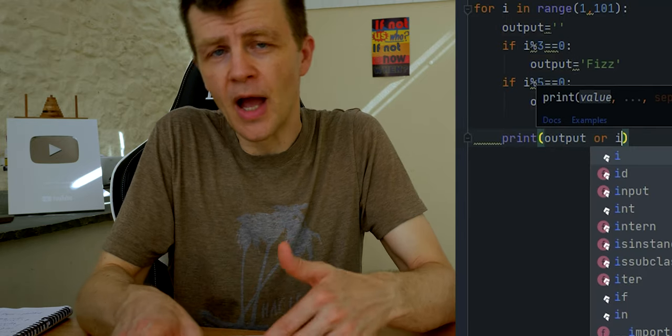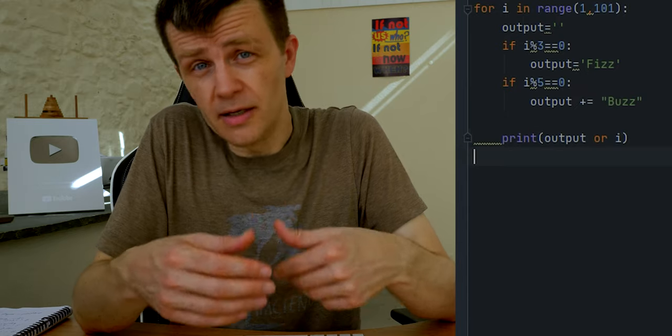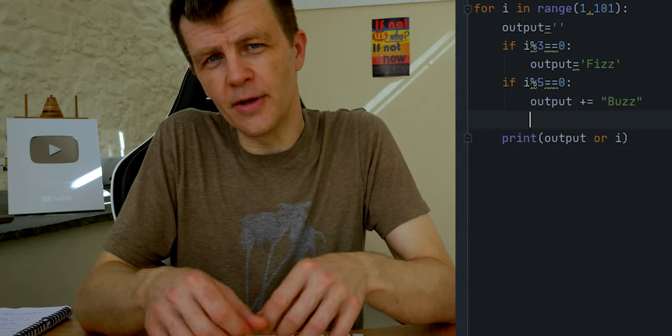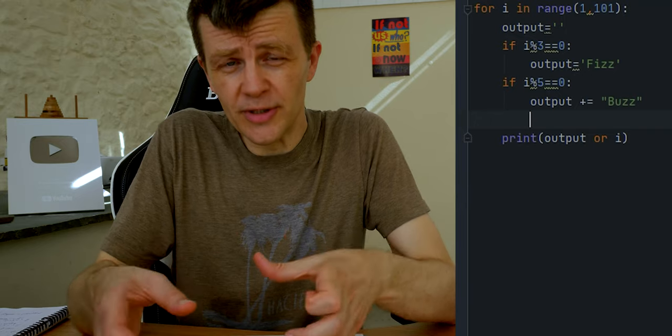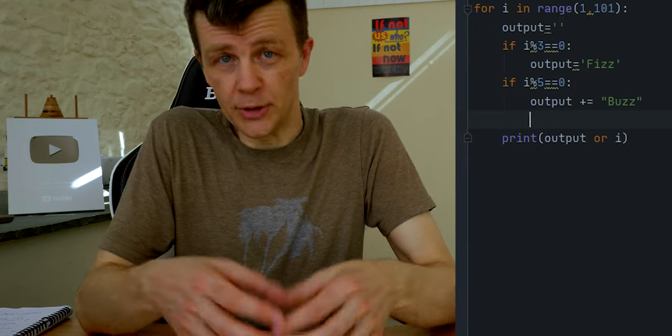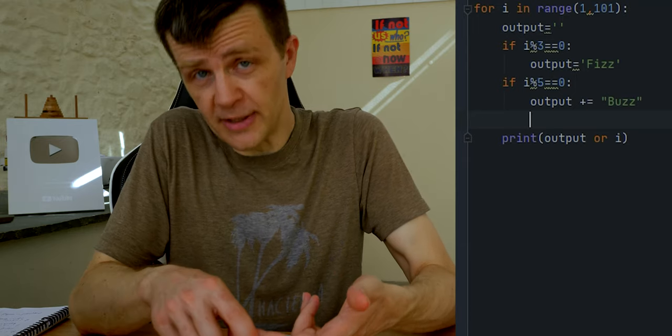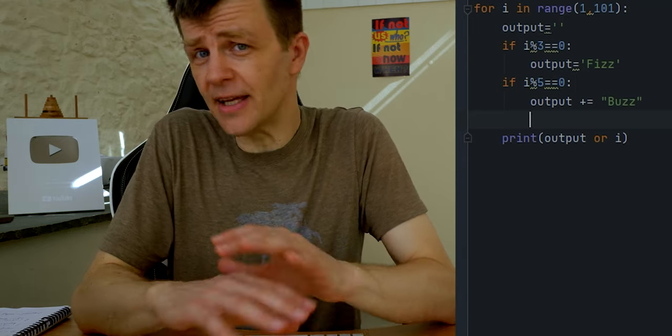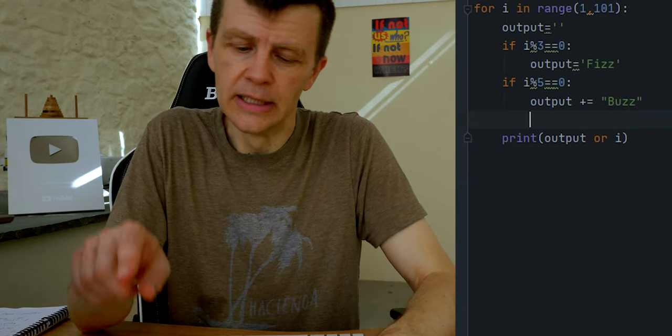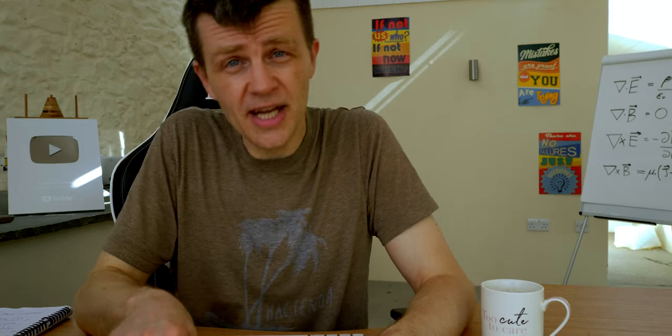And then we can print out either the output which has something in it, or just the i that we're on. So if we use print with or, we'll either get whatever's in the string, which is what we'll want - it'll either be fizz, buzz, or fizz buzz. And if there's nothing in there, if it's an empty string, it'll print the other thing that we've asked it to check for, and that's i. So we'll get numbers where there's no fizz or buzz or fizz buzz.